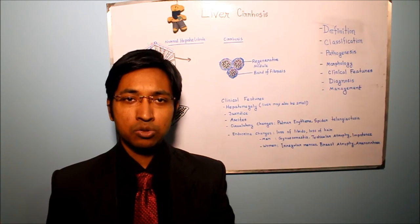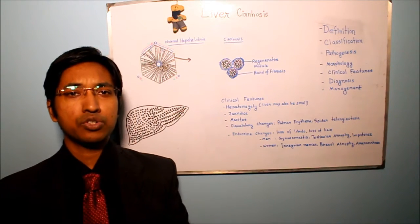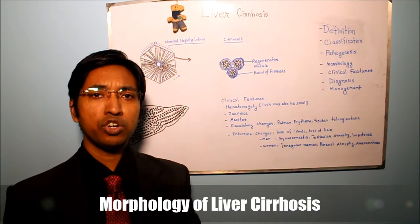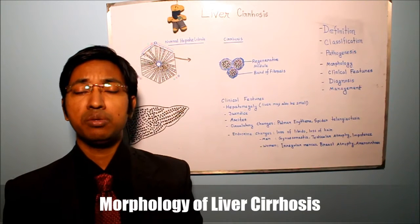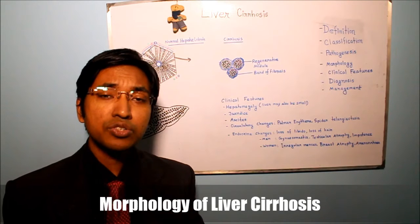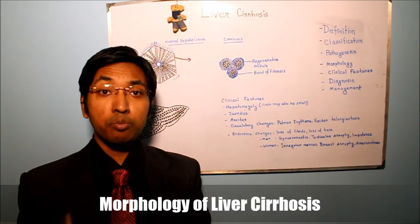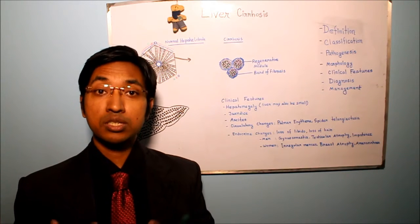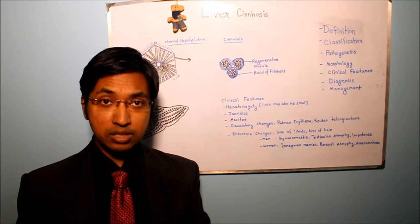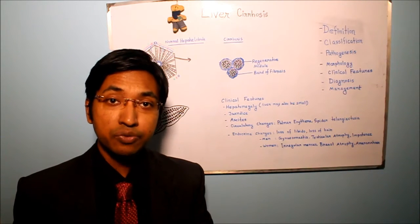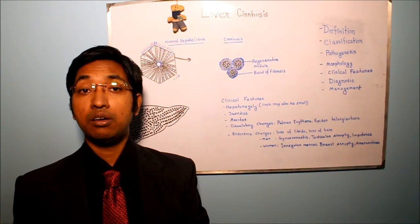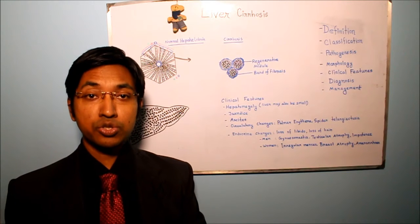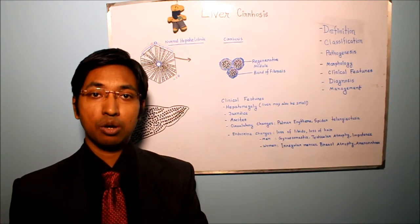So first we will talk about the morphology of liver cirrhosis. Always remember, whenever we are talking about the morphology of liver cirrhosis, the first thing to remember is that in liver cirrhosis the normal lobular architecture of the liver is lost. Instead we will see diffuse transformation of the entire liver into regenerative parenchymal nodules that are surrounded by bands of fibrosis.